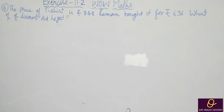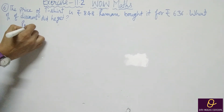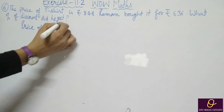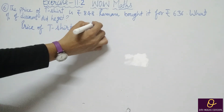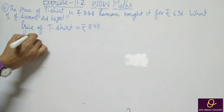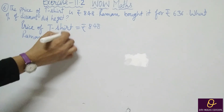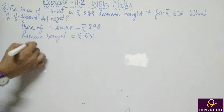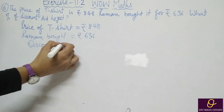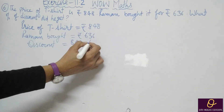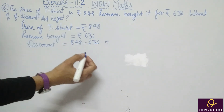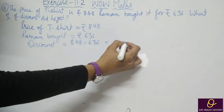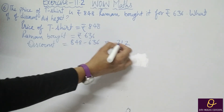Question number 6. The price of a t-shirt is Rs. 848. Raman bought it for Rs. 636. What percent discount did he get? First, discount equals 848 minus 636 = Rs. 212.